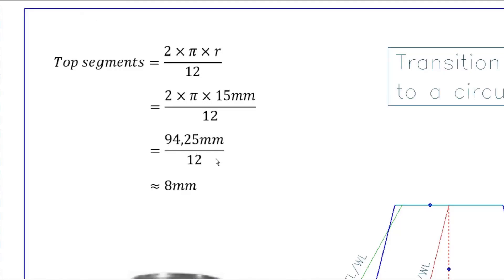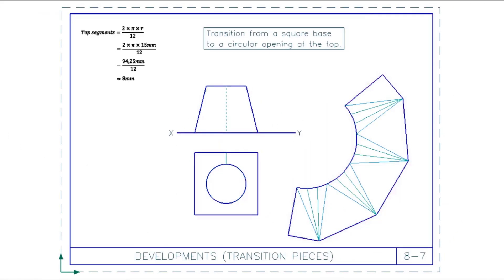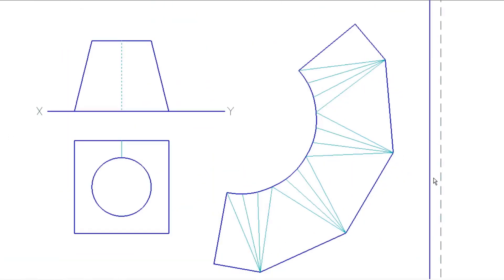The key is knowing to divide the circle by 12 to get your 8mm compass distance. When you're done, it should look like this: fold lines are in between light and dark, and the outline is dark. At the end, once you've plotted all the segment points going around on the inside curve at the top, you take a French curve and connect them. Have a great day!